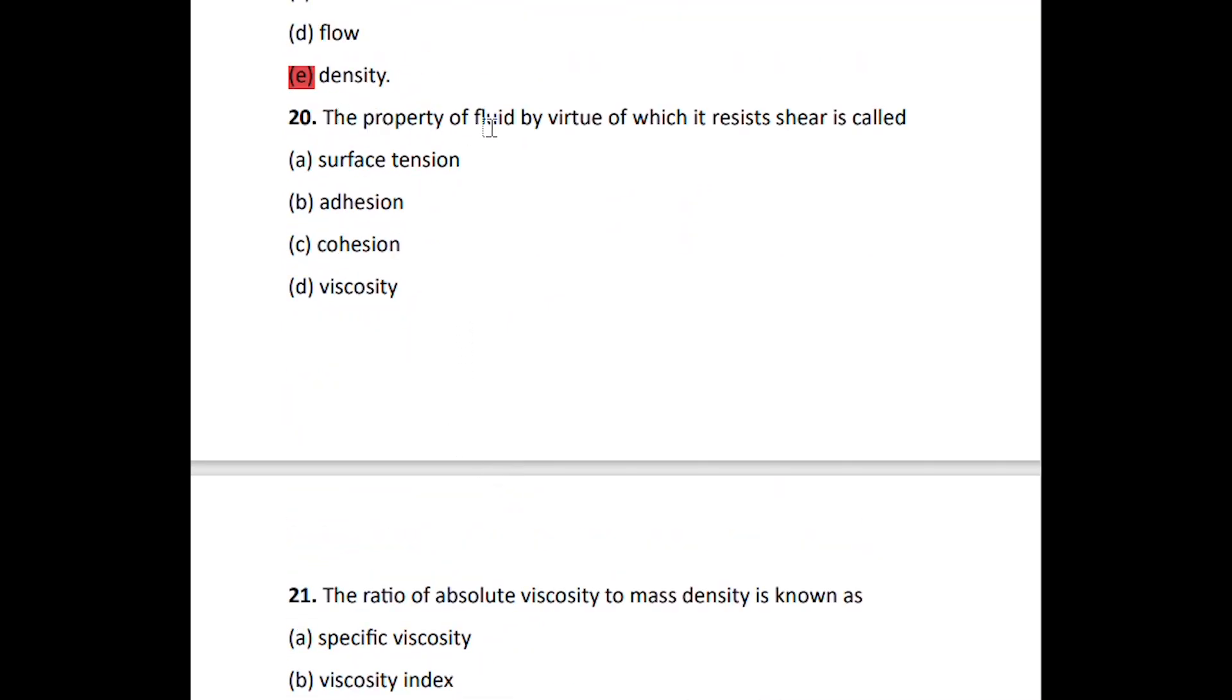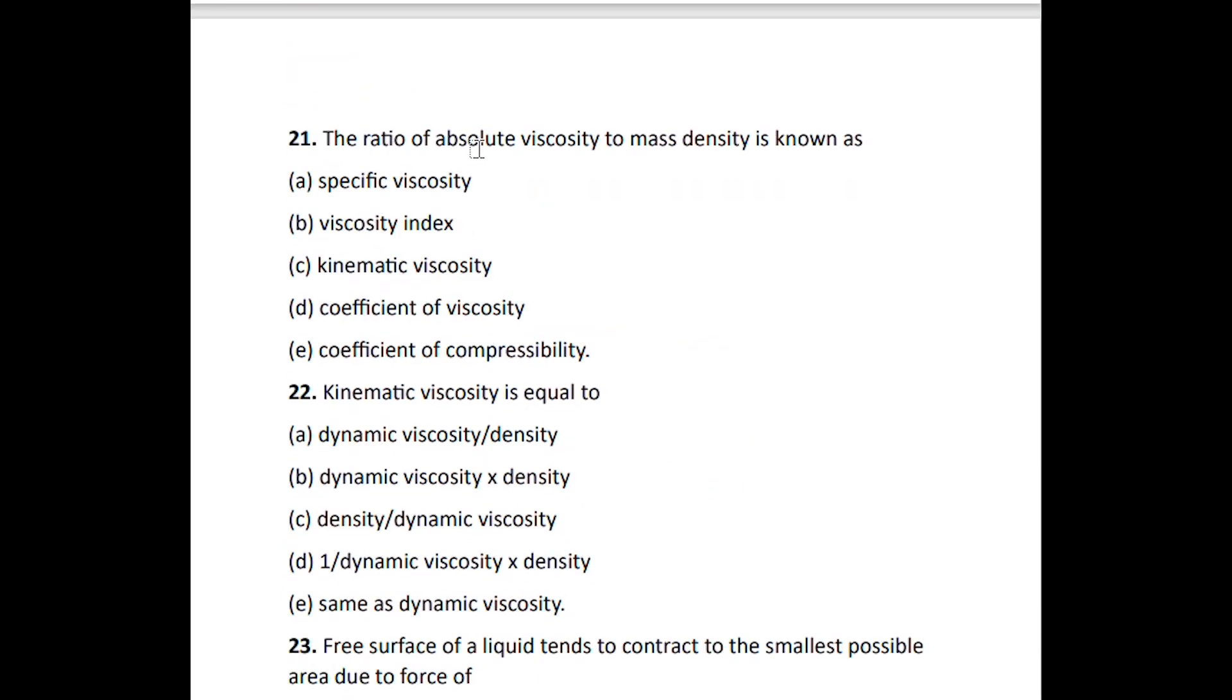Number twenty: the property of fluid by virtue of which it resists shear is called viscosity, which is the constant of proportionality between the shear and the strain for flowing fluids. The ratio of absolute viscosity to mass density is known as kinematic viscosity. Number twenty-two: kinematic viscosity is equal to dynamic viscosity over mass density.